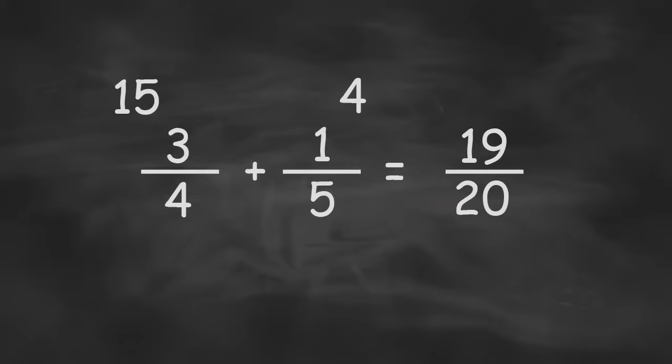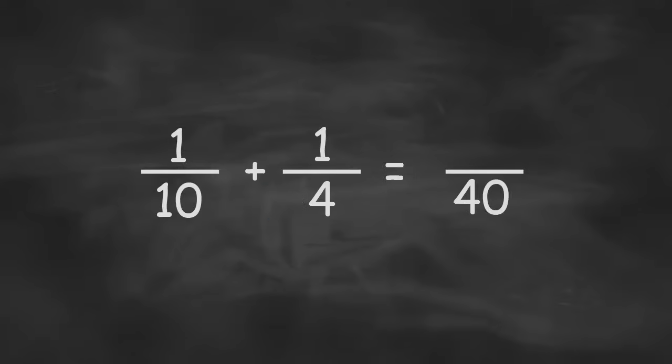Now you can run into trouble with adding and subtracting fractions when your answer isn't as simple as it could be. So take, for example, 1 tenth and 1 fourth. We can't just add these together. So we're going to multiply across like we did in our last example, and we get 40.